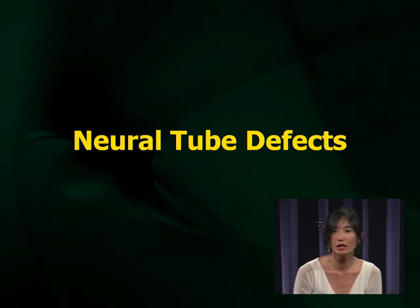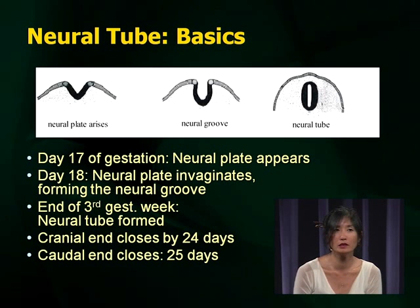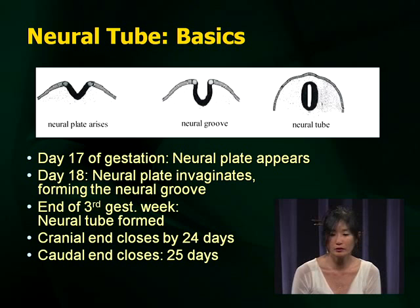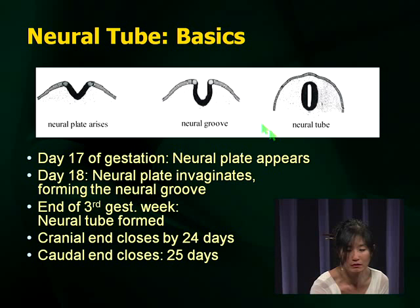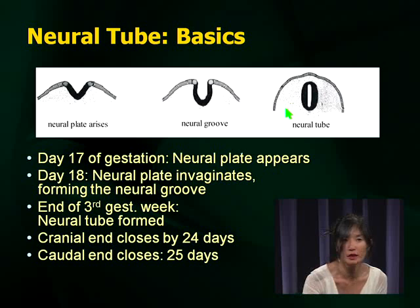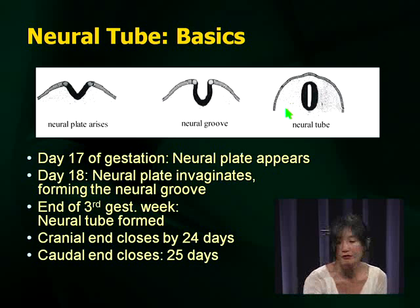Neural tube defects occur in the first trimester, and that's why there's all that emphasis on folate supplementation early on, and why the public health movement has brought forth folate supplementation. Remember that there are multiple stages in the formation of the neural tube, starting with the coming of the neural plate, together with the formation of the neural groove, and the neural tube finally. This progression finishes by about the fourth week.